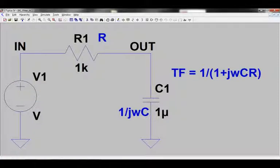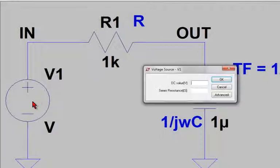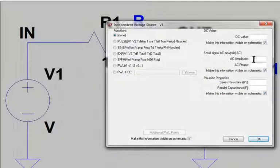Once the voltage source has been placed on the schematic, right click over the voltage source, click the advanced button, and in the AC amplitude box select 1V. Click OK.